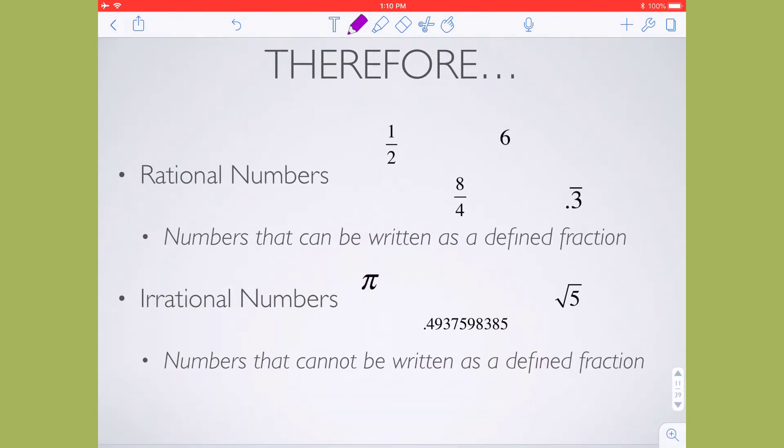Rational numbers are numbers that can be written as defined fractions. Irrational numbers are numbers that cannot be written as defined fractions. I like to think about rational numbers as generally being my more pretty numbers, and irrational being my not-so-pretty numbers, because you get values like this that I've underlined that are long and nasty, and there's no simple way to write it.